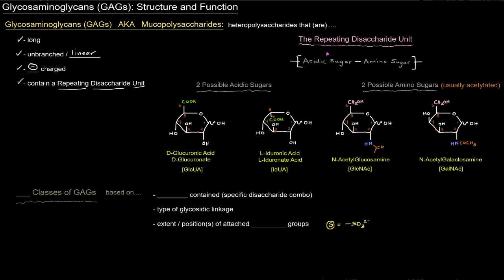The repeating disaccharide unit, of course disaccharides refers to two sugars that are linked together, and this unit repeats. Specifically we have an acidic sugar linked to an amino sugar, and that is going to be the disaccharide unit. That unit will repeat, so you'll have n disaccharide units.